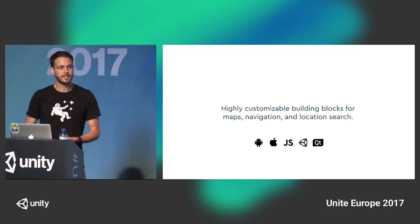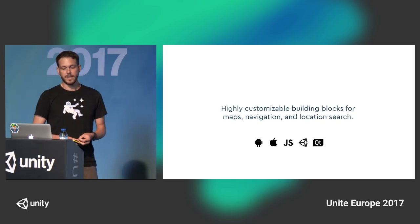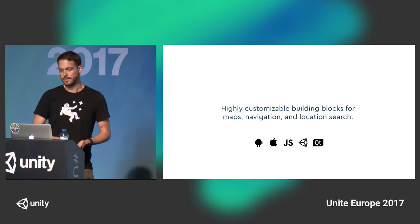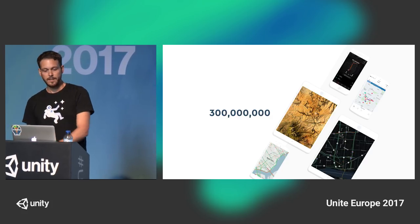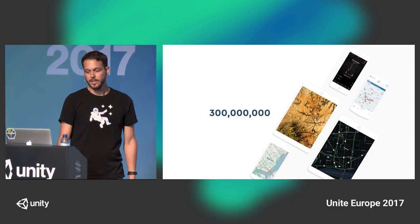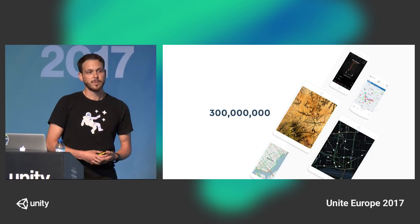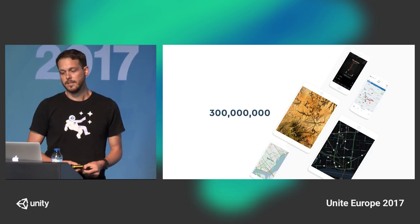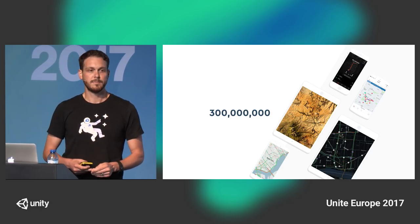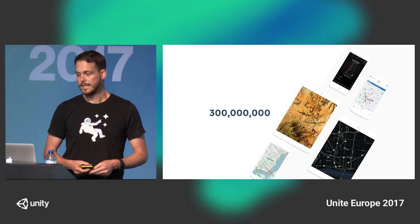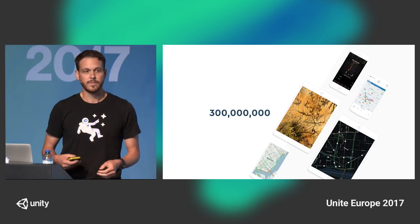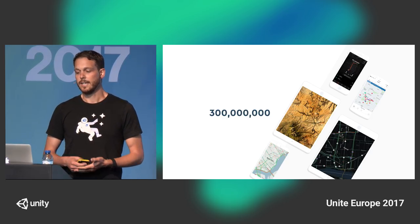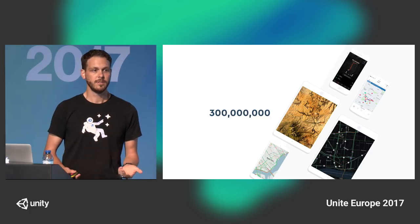Mapbox has crazy fast and highly customizable SDKs for Android, iOS, Qt, and of course Unity now. We have over 70,000 active developers building with the Mapbox platform, including companies like the Weather Channel. Over 300 million people touch maps every single month. We offer three core products: maps, navigation, and geocoding, which is like searching.